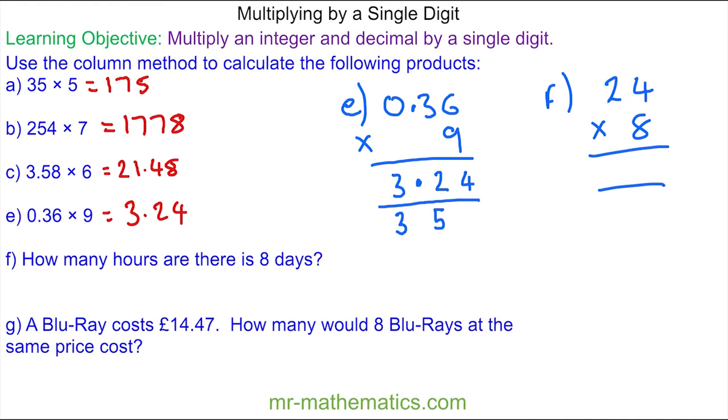4 times 8 is 32. So 3 tens and 2 units. 2 times 8 is 16. Add the 3 which is 19. So that's 9 tens and 1 hundred. So there are 192 hours.